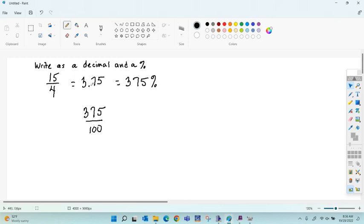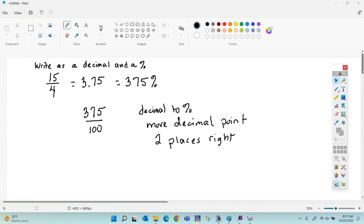The quick way of doing that is to just move your decimal place two places to the right. So that is your quick trick: decimal to percent, move the decimal point two places right. It's a nice quick trick on making a decimal into a percent. And for the opposite, if you were taking a percent and making it to a decimal, you would move it two places left. So 375 percent is the same as 3.75, which is the same as 15 fourths.